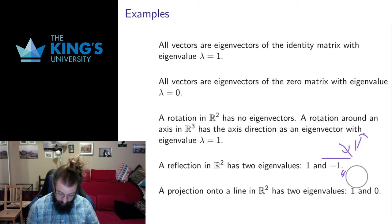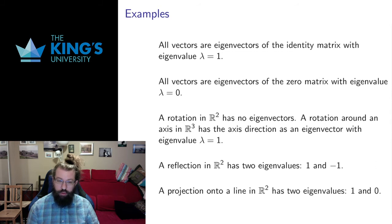In these two examples, the eigenvalues, or the eigenvectors rather, were perpendicular to each other. That doesn't need to be true in general. That's just true of these particular examples of reflections and projections.